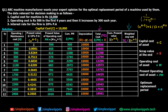Next, calculate cumulative present value — the running sum of v^(n-1) values. For year 1 it is 1, for year 2 it is 1 + 0.9091 = 1.9091, for year 3 add 0.8264 to get 2.7355, and so on. I've filled out the entire cumulative present value column.